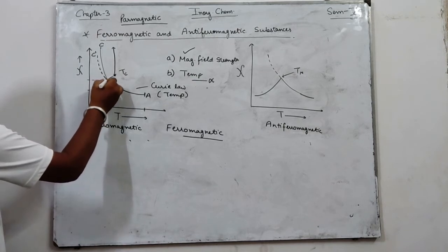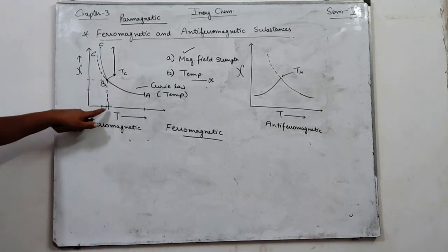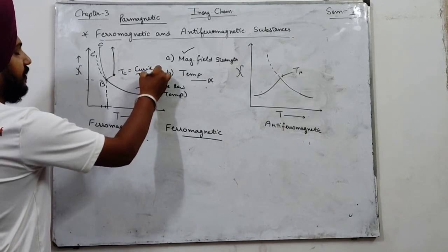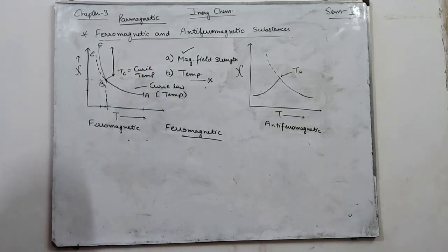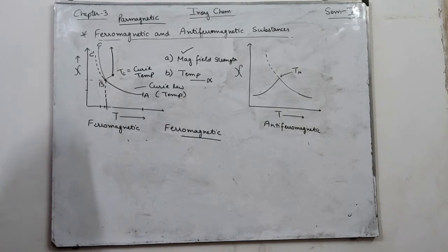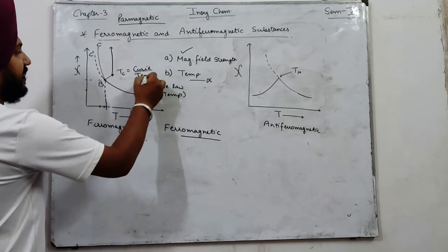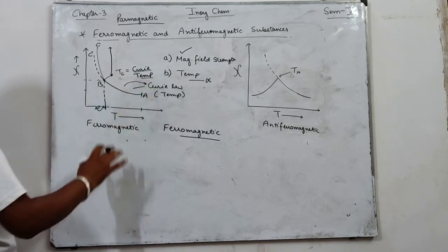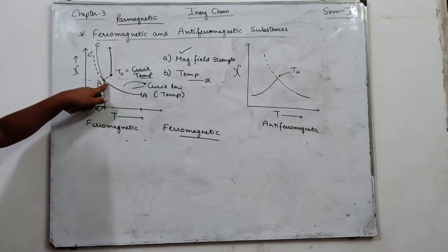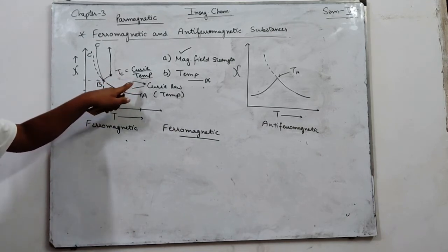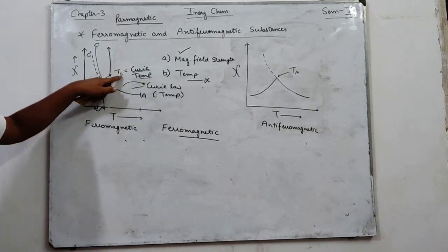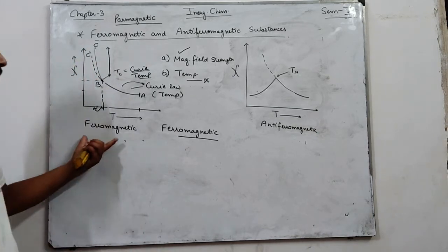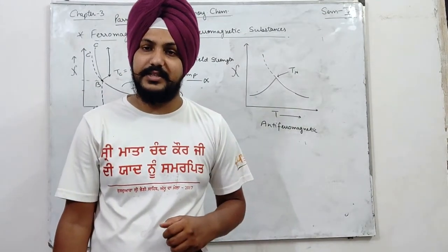यह B point एक particular temperature पर आता है जिसे हम Curie temperature (Tc) कहते हैं। Ferromagnetic substances Curie temperature के बाद Curie law को follow करते हैं — यानी curve temperature dependent होती है। Curie temperature से पहले Curie law को follow नहीं करते — यानी curve magnetic field strength dependent होती है। यह ferromagnetic substances का behavior है।